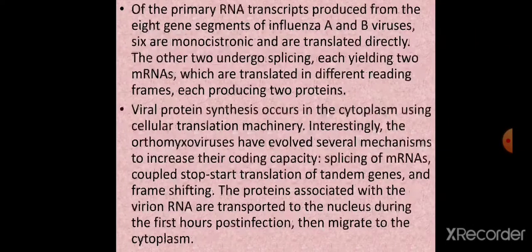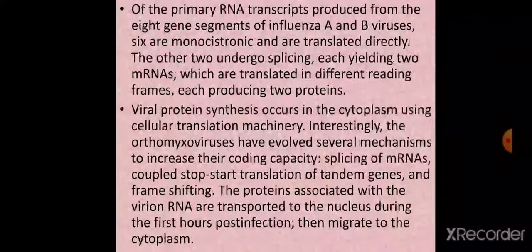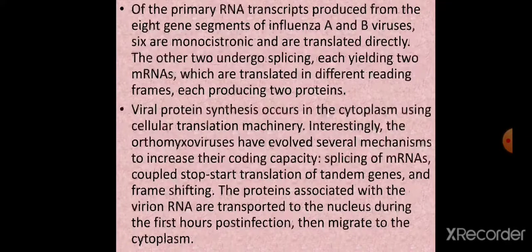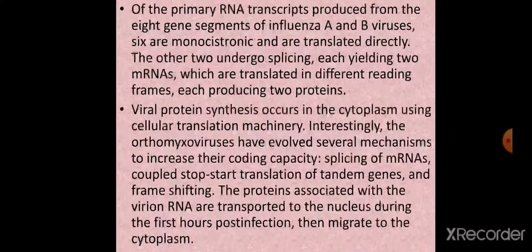Of the primary RNA transcripts produced from the eight gene segments of influenza A and B viruses, six segments are monocistronic and are directly translated into proteins. The other two segments undergo splicing, each yielding two mRNAs translated in different reading frames, each producing two proteins. Viral protein synthesis occurs in the cytoplasm, while transcription and replication occur inside the nucleus, using cellular translation machinery.